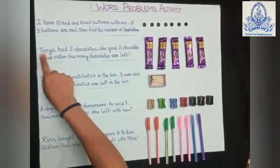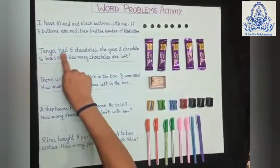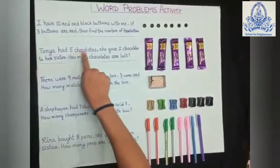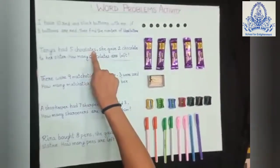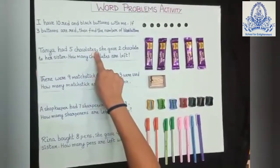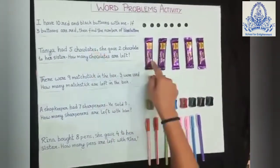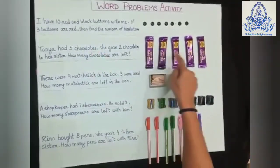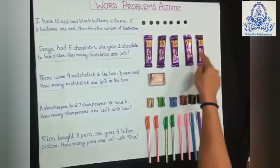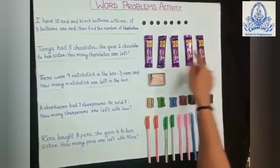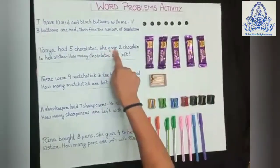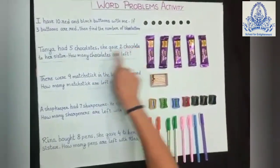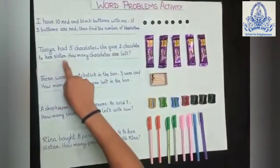Now the next one. Tanya had 5 chocolates — 1, 2, 3, 4, 5. She gave 2 chocolates to her sister.